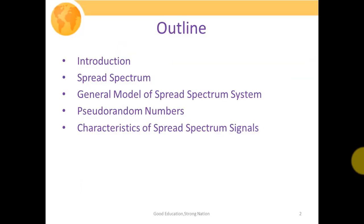These are the outlines. We will start with the introduction, then we will discuss what is spread spectrum, which will be followed by the general model description of spread spectrum systems. Then we will discuss briefly about pseudo random numbers. And finally, we're going to conclude by discussing some of the characteristics of spread spectrum signals.